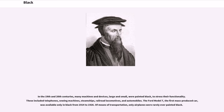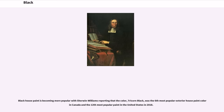In the 19th and 20th centuries, many machines and devices, large and small, were painted black to stress their functionality. These included telephones, sewing machines, steamships, railroad locomotives, and automobiles. The Ford Model T, the first mass-produced car, was available only in black from 1914 to 1926. Black house paint is becoming more popular, with Sherwin-Williams reporting that the color tricorn black was the sixth most popular exterior house paint color in Canada and the 12th most popular in the United States in 2018.